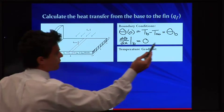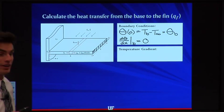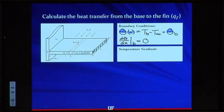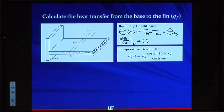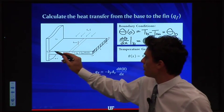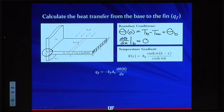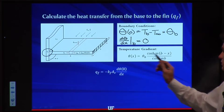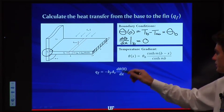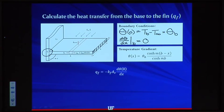With these boundary conditions plugged into the homogeneous differential equation, we get an exact solution. The temperature distribution along the fin is given by a hyperbolic trigonometric function of position x. To find qf — the amount of heat convecting into the fin — we apply Fourier's law: we take the derivative of the temperature expression with respect to x evaluated at zero, which gives a hyperbolic tangent function.